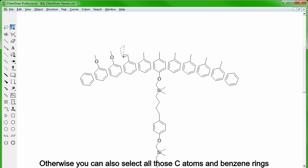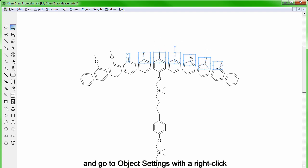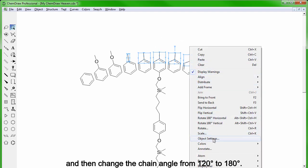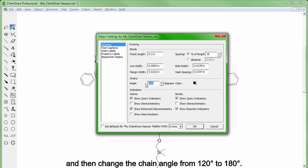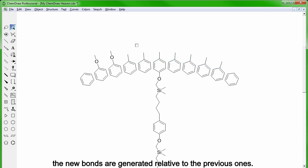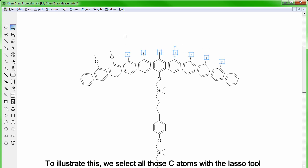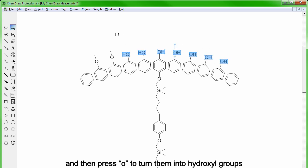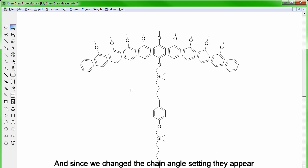Otherwise you can also select all those carbon atoms and benzene rings and go to object settings with a right click and then change the chain angle from 120 to 180 degrees. What this will do is change the angle with which the new bonds are generated relative to the previous ones. And to illustrate that we select all those carbon atoms with the lasso tool and then press O to turn them into hydroxyl groups. And while they're still selected we press 0 to sprout a carbon atom from them. Since we changed the chain angle setting they appear forming a 180 degrees angle relative to the other bond.